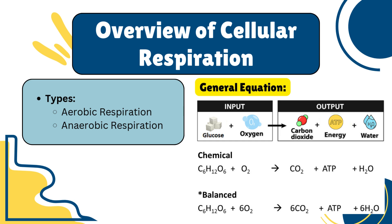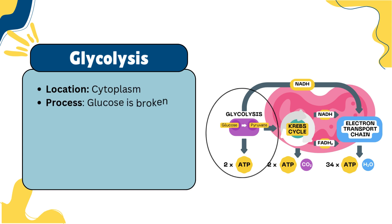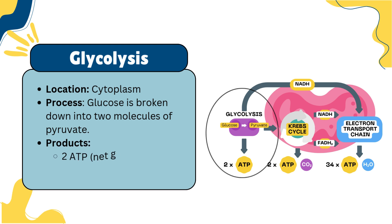Let's dive deeper into the first stage: glycolysis. This process takes place in the cytoplasm, where one molecule of glucose is broken down into two molecules of pyruvate. Glycolysis yields a net gain of 2 ATP and produces 2 NADH, which are vital for the next stages of respiration.